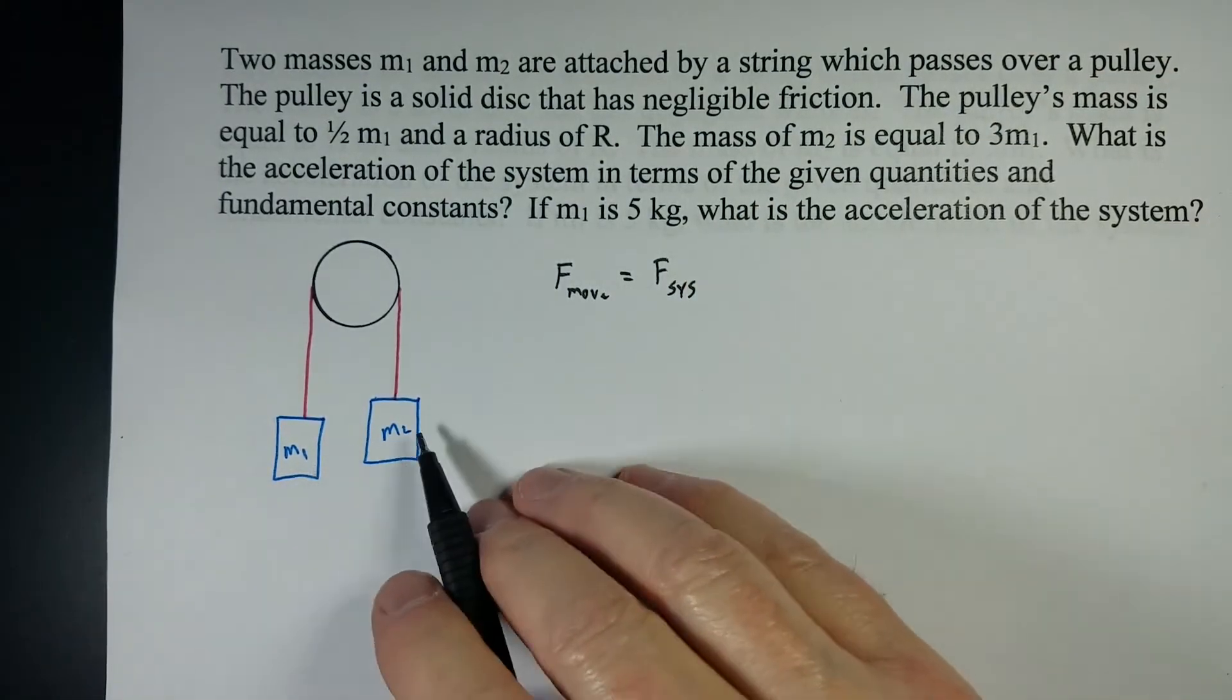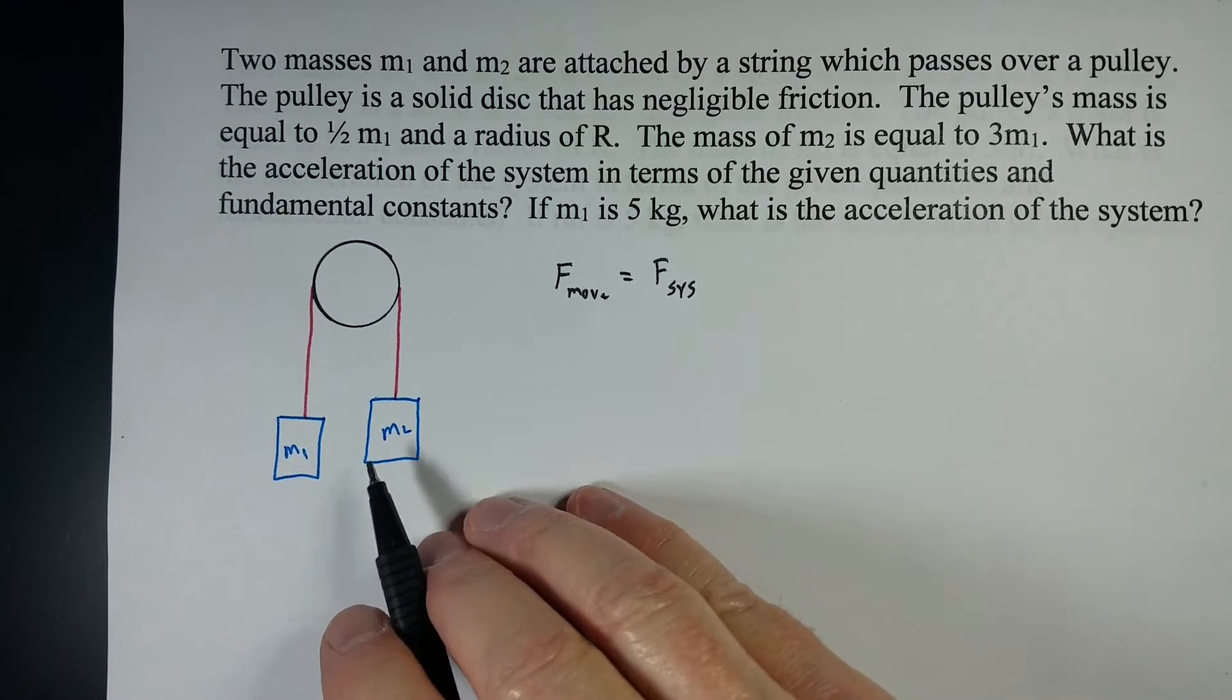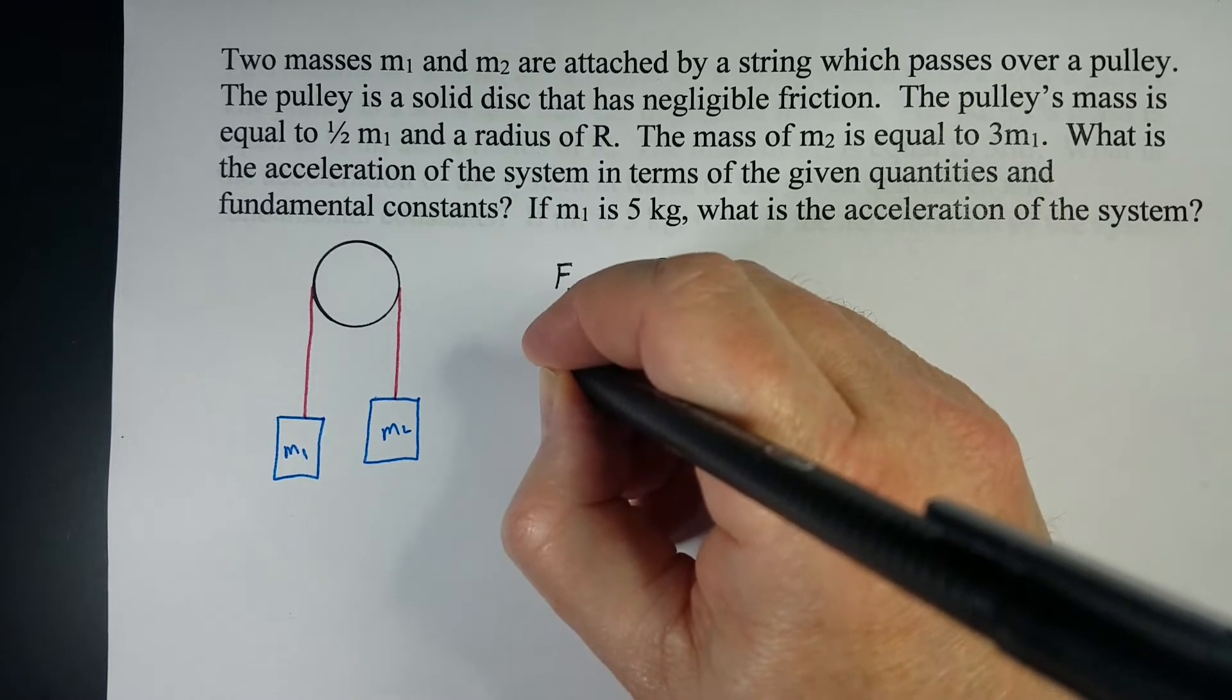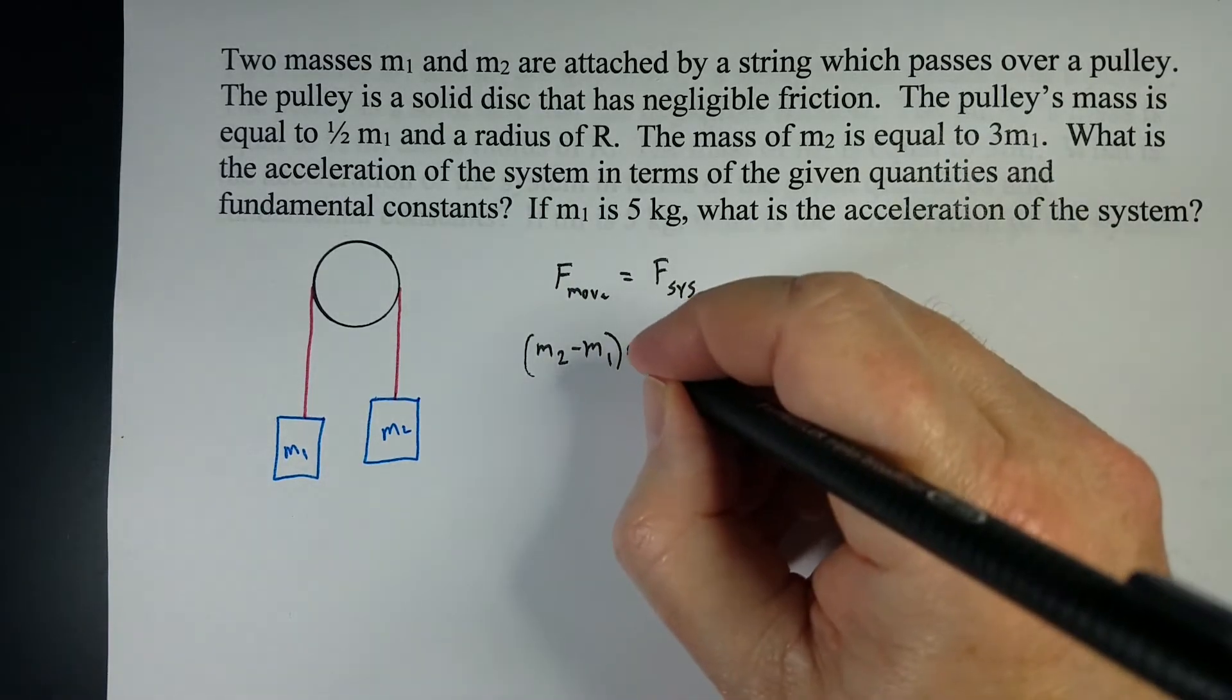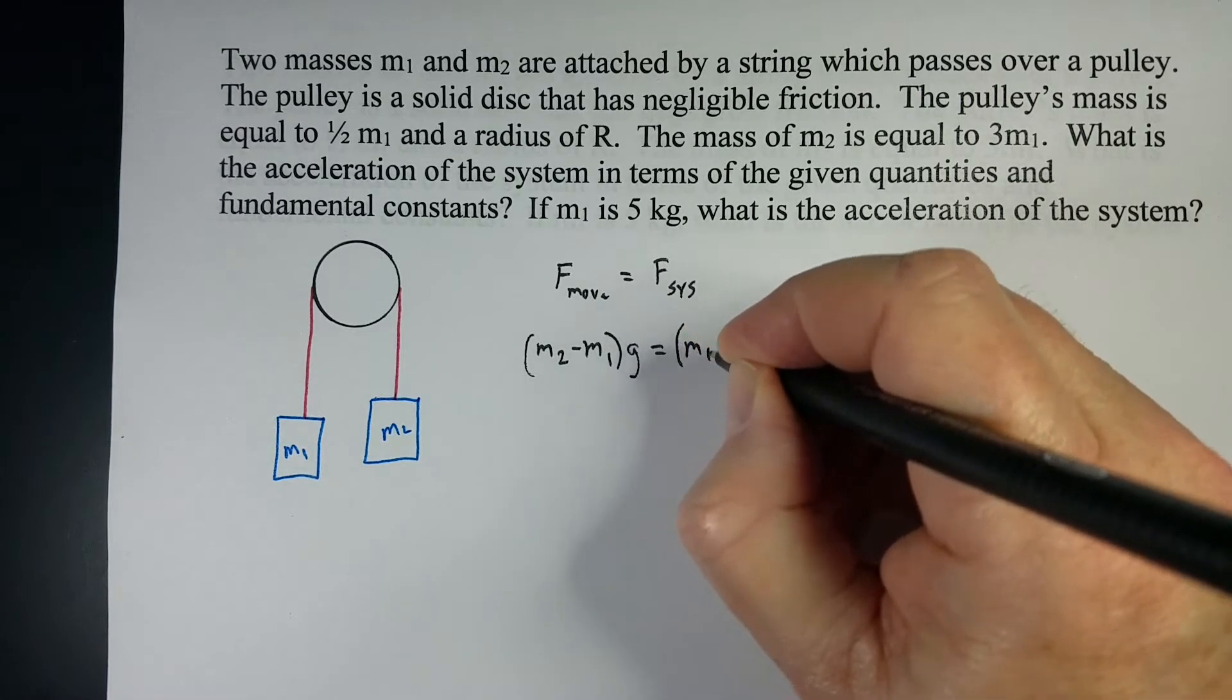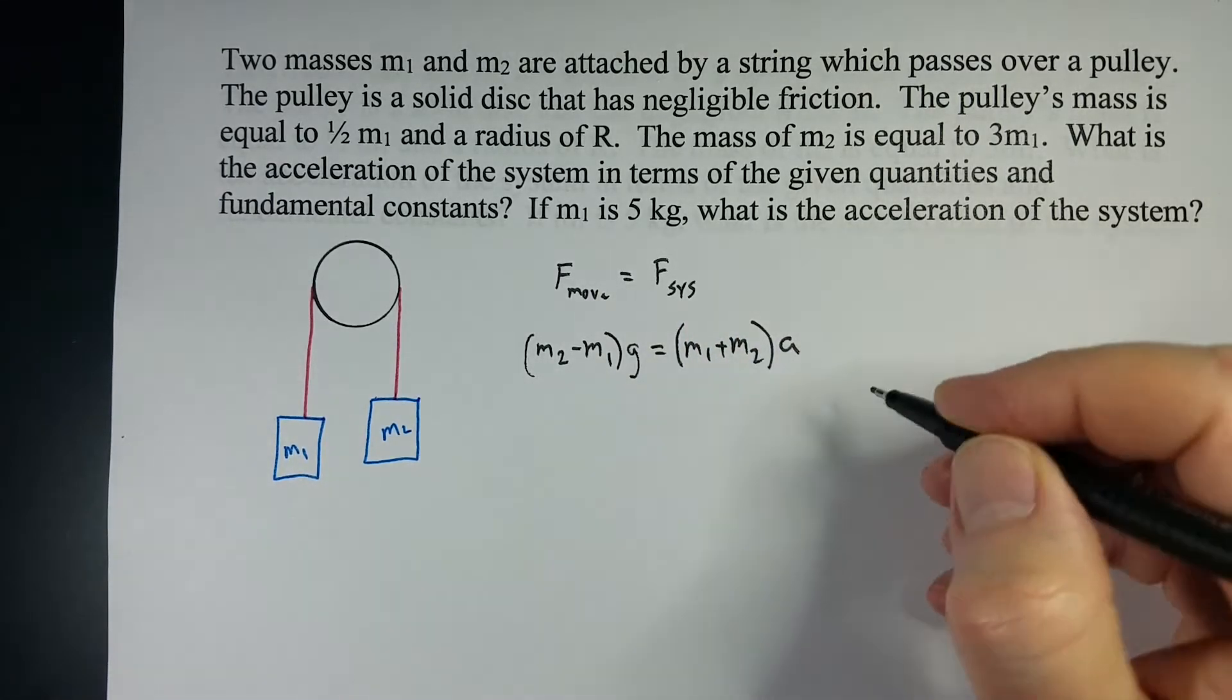The force that's making it move equals the force on the system. What's making it move is the difference in the two weights. M2 is heavier, so I'm going to have it first: M2 minus M1 times gravity equals the system, which is M1 plus M2, times the acceleration of the system.